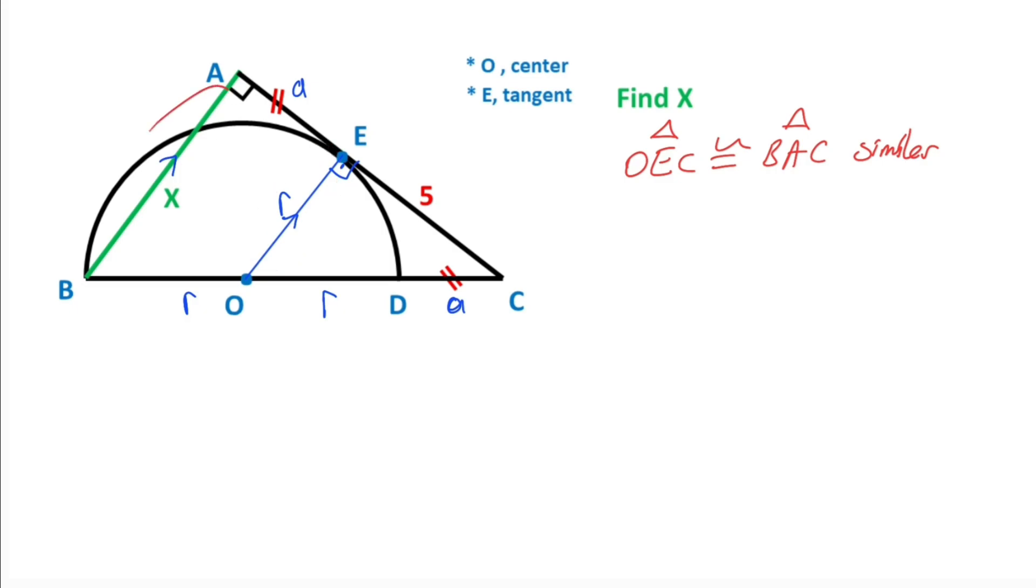And then r over x equals the first part, 5, over the second part, 5 plus a, which equals the first part, a, over the total, a plus 2r.